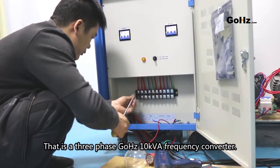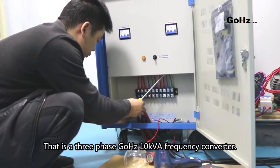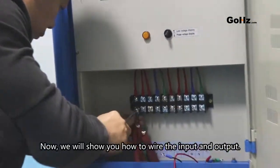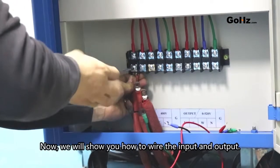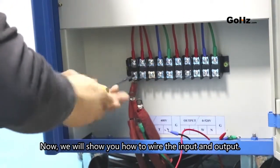That is a 3-phase GoHz 10 kVA frequency converter. Now we will show you how to wire the input and the output.